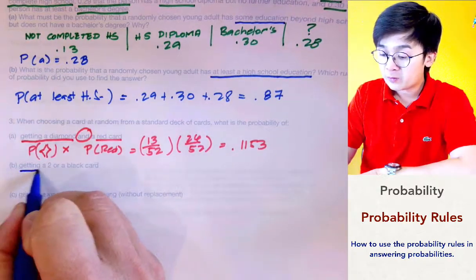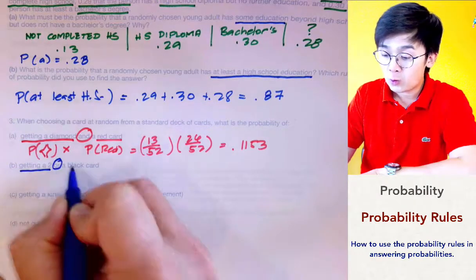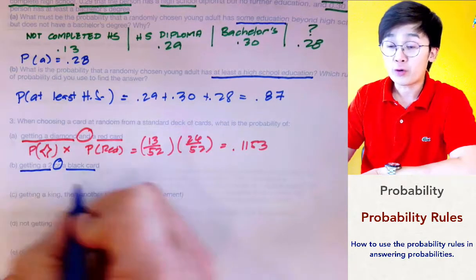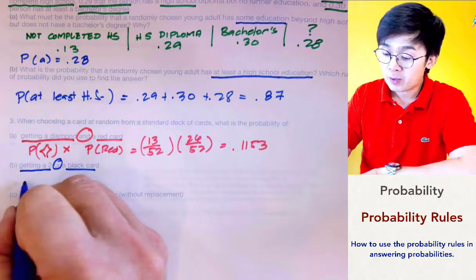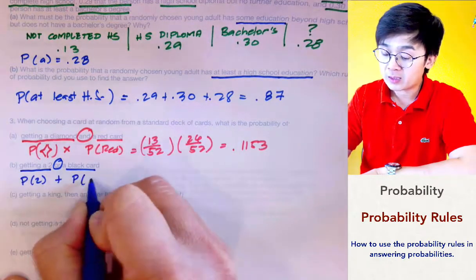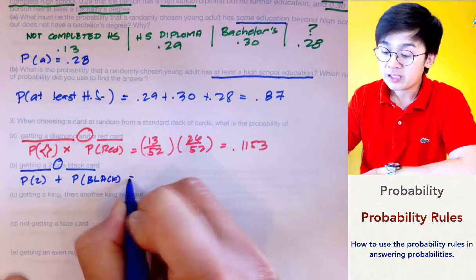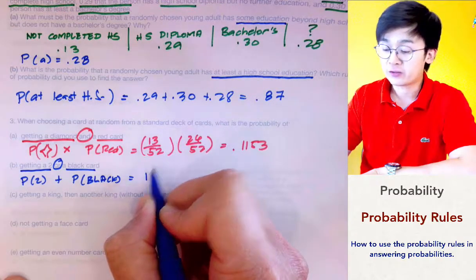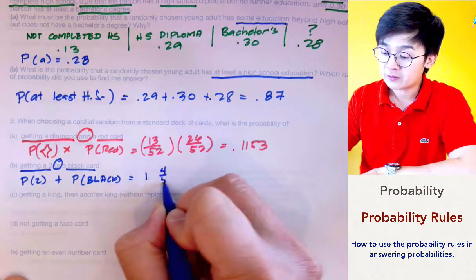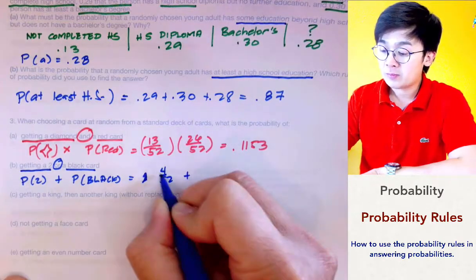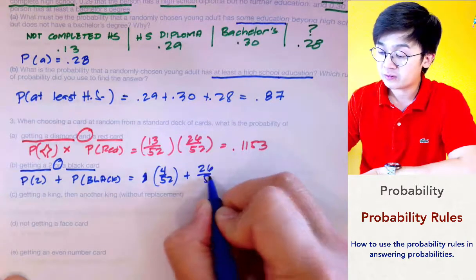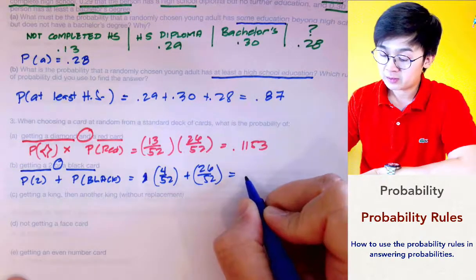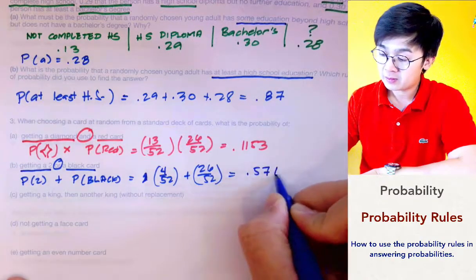For the second question, we find the probability of getting a 2 OR a black card. The OR operation requires adding the two probabilities for independent events. The probability of a 2 is 4/52, and the probability of a black card is 26/52. Adding these and converting to decimal gives us 0.5769.